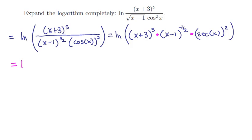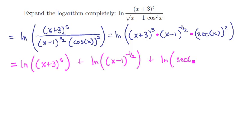So I can write this as ln of (x plus 3) to the 5th, plus the natural logarithm of (x minus 1) to the negative 1/2, plus the natural logarithm of secant of x quantity squared.